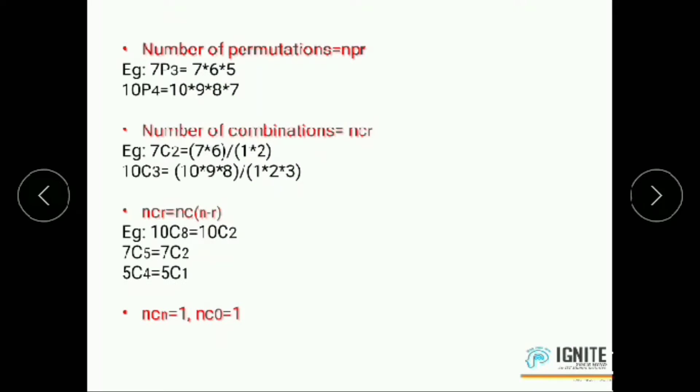But we can solve NPR and NCR without formula. For example, 7P3 by using formula N factorial by N minus R factorial, that means 7 factorial by 4 factorial. But without formula we can write it as 7 into 6 into 5, product of three numbers from 7 in descending order. And the example, 10P4, 10 into 9 into 8 into 7.